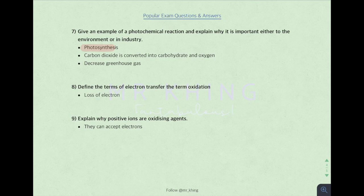Explain the term oxidation. Remember oxidation means loss of electrons. So why positive ions, they are good oxidizing agents.